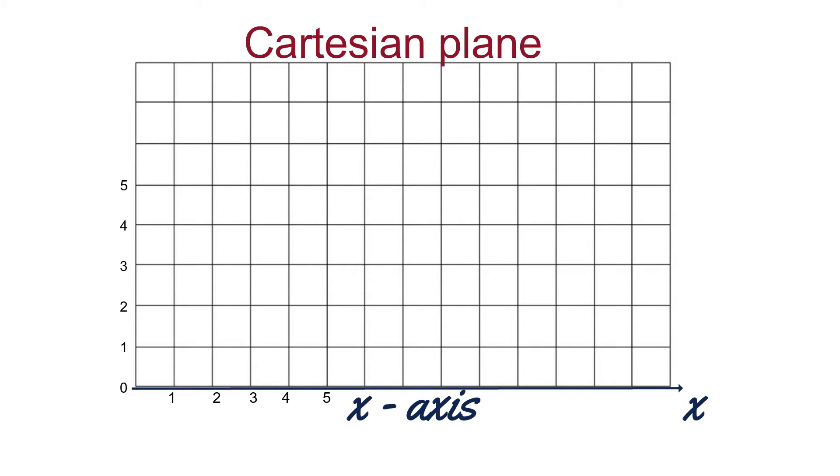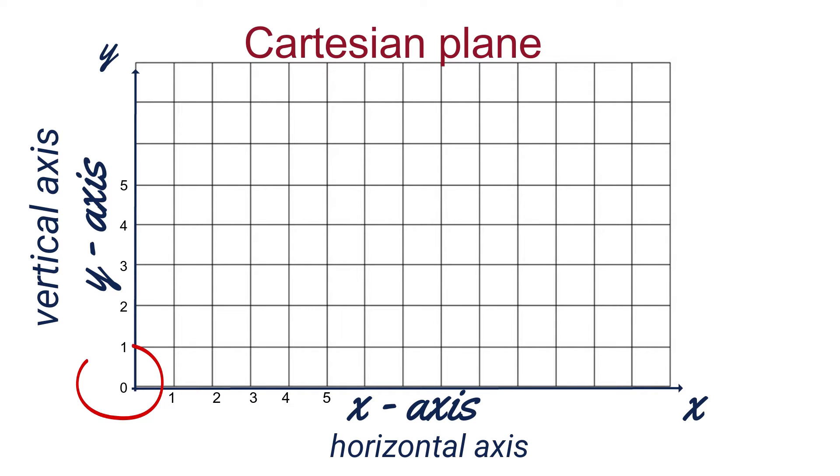Before we start our lesson, let's see what is a Cartesian plane. A Cartesian plane is a graph with two axes. One is called the x-axis and the other one is y-axis. The x-axis is also known as a horizontal axis and y-axis is also known as a vertical axis. These two axes are perpendicular to each other. The intersection point of the x-axis and y-axis is called origin.